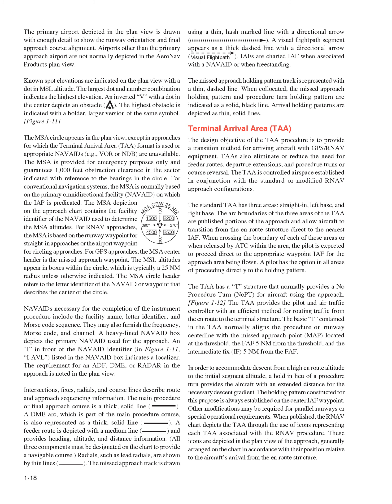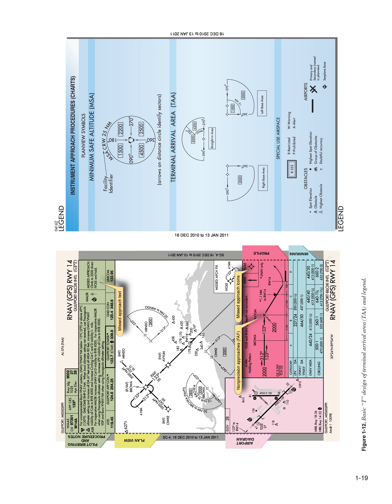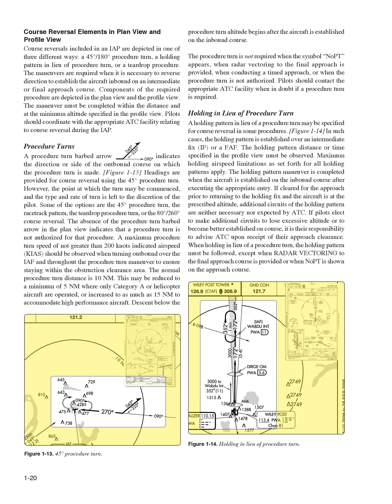When published, the RNAV chart depicts the TAA through the use of icons representing each TAA associated with the RNAV procedure. These icons are depicted in the plan view of the approach, generally arranged on the chart in accordance with their position relative to the aircraft's arrival from the on-route structure. Course reversal elements in plan view and profile view: course reversals included in an IAP are depicted in one of three different ways—a 45/180 degree procedure turn, a holding pattern in lieu of procedure turn, or a teardrop procedure.